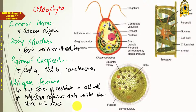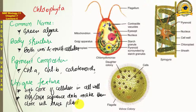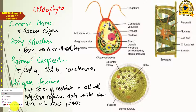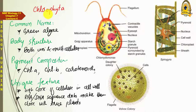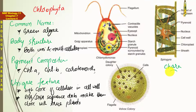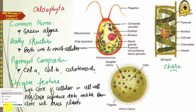Their pigment composition matches, their cell wall has high cellulose content, and RNA and DNA sequence data also resembles true plants. Based on these features, it is assumed that both Green algae and true plants have a common origin. A specific group of Green algae called Charophyta — whose famous member is Chara — is very close to true plants.